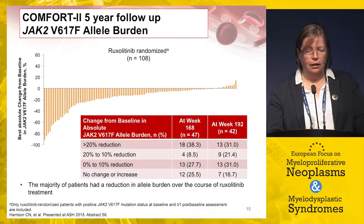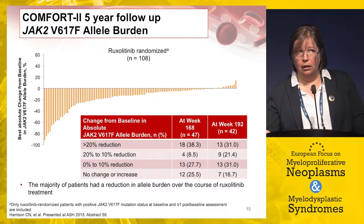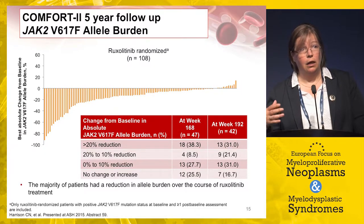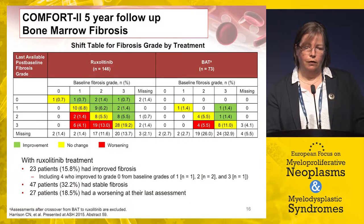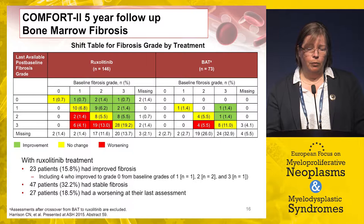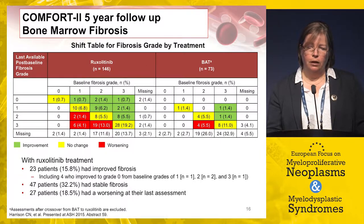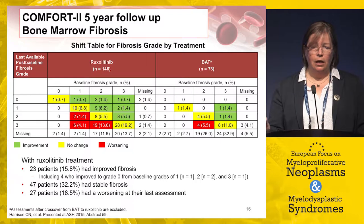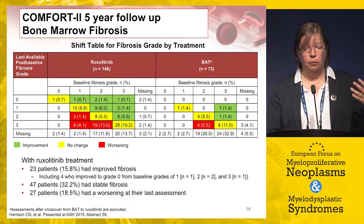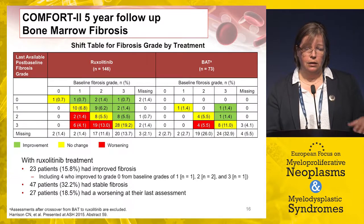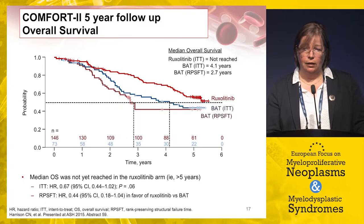JAK inhibitors have a mixed effect on the JAK2 allele burden, but I don't measure this in routine clinical practice and don't routinely follow up bone marrow biopsies. Data from COMFORT-2 show around 16% of patients having improvement in fibrosis score, but an equal percentage having worsening — this is not something we use to monitor JAK inhibitors in clinical practice.